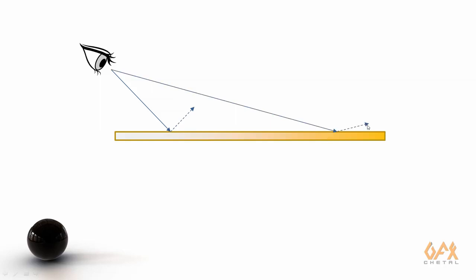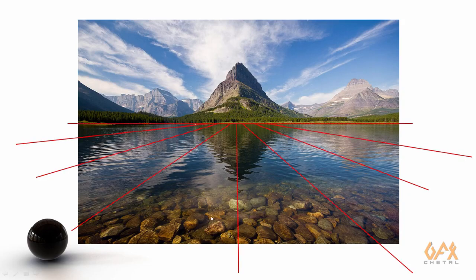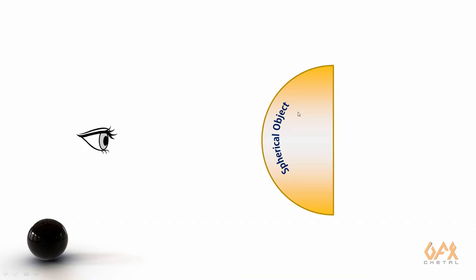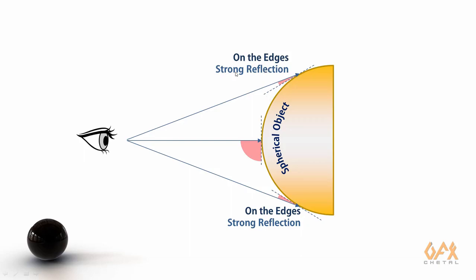At a far distance, because of the steep angle, you get a weak reflection. But at a near or flat angle, you get a strong reflection. For example, on a water surface — which is a reflective surface — you get weak reflection nearby and strong reflection further away. The same applies to a spherical object, where at the edges you get strong reflection.